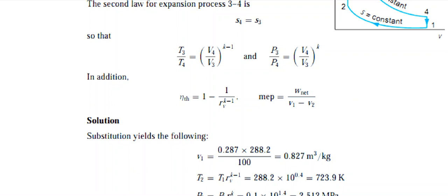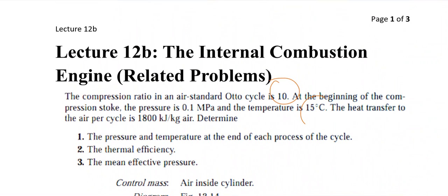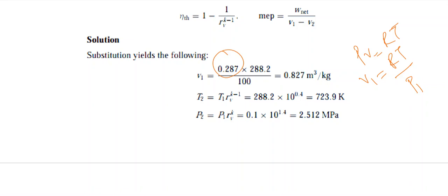Step by step: for State 1, pressure and temperature are given. We find V1 using PV = RT, so V1 = RT1/P1. R for air is 0.287 kJ/(kg·K); temperature is 15°C = 288.2 K; pressure is 0.1 MPa = 100 kPa. Therefore V1 = (0.287 × 288.2) / 100 = 0.8274 m³/kg.